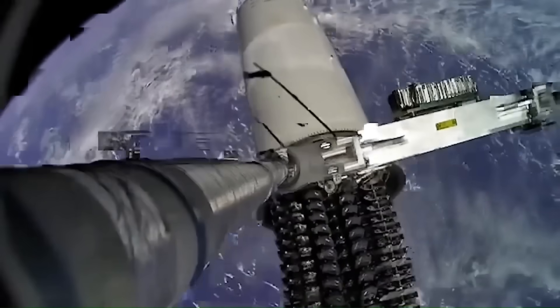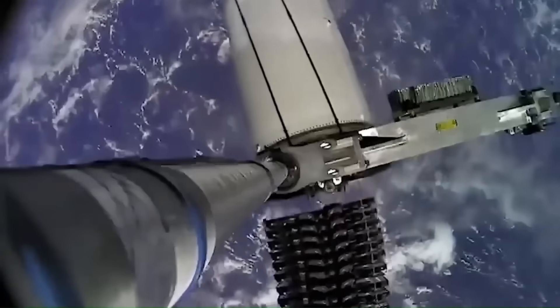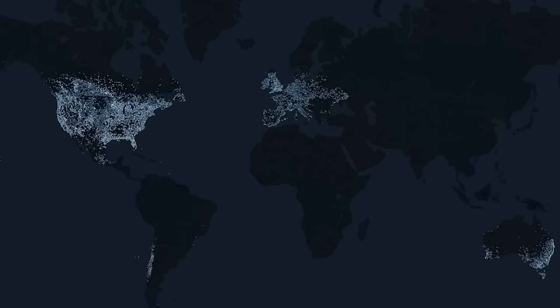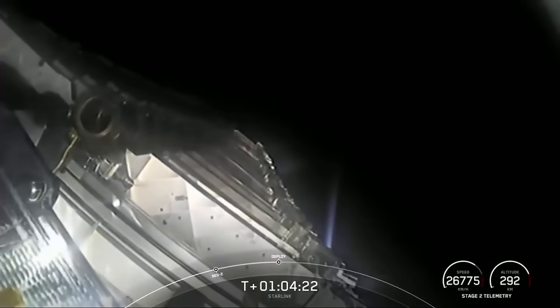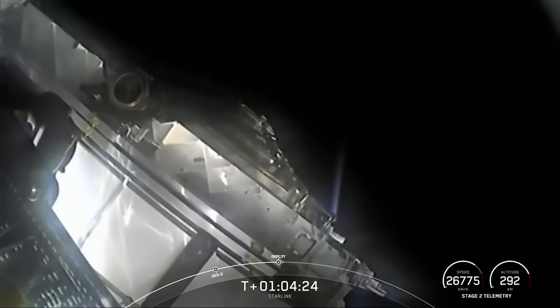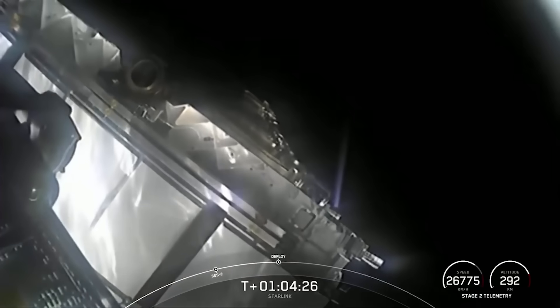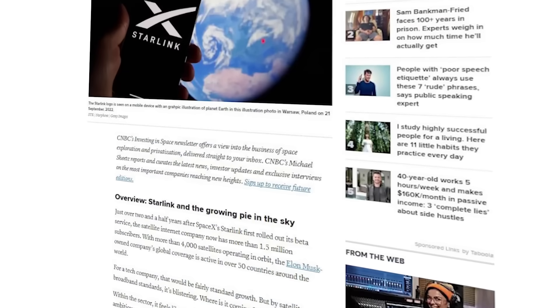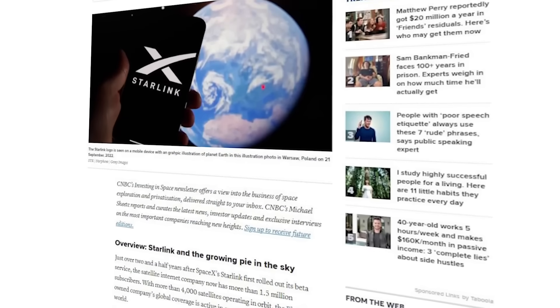A few hours later, the Vice President of Engineering at Starlink, Michael Nichols, confirmed that most of the service was working again. This outage was one of the most serious and longest ones in Starlink's history. Normally, Starlink has a very high reliability rate, close to 99.95% uptime. Outages in previous years were shorter and less widespread, often lasting less than one hour.